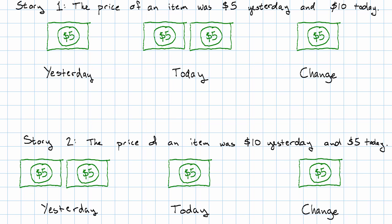Well, in the first story, the change was an increase. And in the second story, the change was a decrease. The way that we indicate that is to say that the first change was positive and the second change was negative.